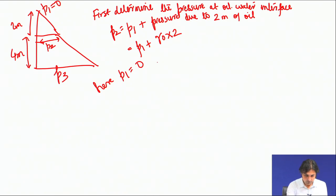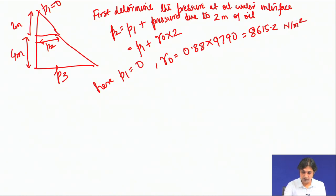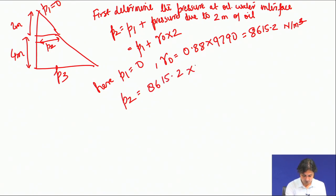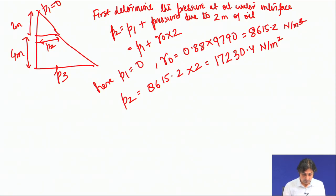P1 equals 0. γ0, the unit weight of oil, equals specific gravity times 9790 = 0.88 times 9790 = 8615.2 N/m³. Therefore P2 equals 8615.2 times 2 = 17230.4 N/m². Note: you can also use 9800 instead of 9790 — it is just an assumed standard value.